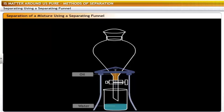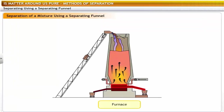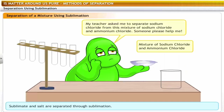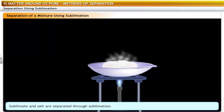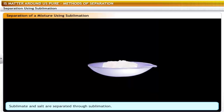This same method of separation is used to extract iron from its ore — the slag and molten iron form two distinct layers inside the furnace, the lighter layer of slag is removed from the top and the molten iron gets left behind. Ammonium chloride changes directly from the solid to the gaseous state on heating — this is known as sublimation. To separate a mixture containing salt and a sublimable solid such as ammonium chloride, you can use the process of sublimation.